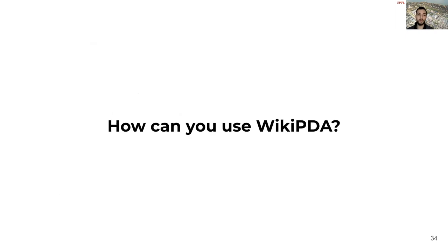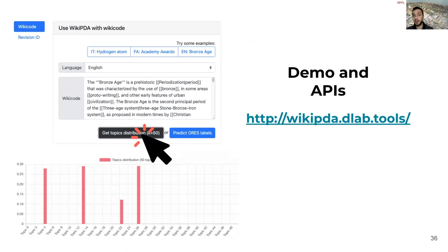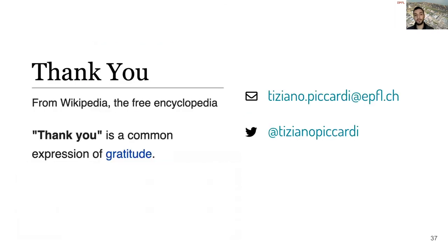In conclusion, how can you use WikiPDA? We released all the pre-trained models, and to make things even easier, we developed a Python library that can be used to get the topic distribution of any article. With a few lines of Python, you can get the topics distribution of any article and use the pre-trained supervised model. A sample of this library is also deployed as a web API at the address wikipda.dlab.tools. Visit this website if you are interested in trying WikiPDA without a need to install the library and all its dependencies. Thank you for your attention, and I invite you to read the paper to find out more about our method and results. We are looking forward to see how you will use WikiPDA for your project.